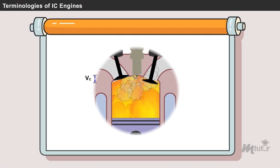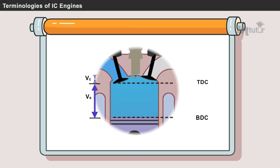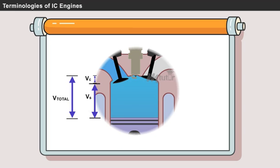The volume swept through by the piston between top dead center and bottom dead center is called swept volume. It is also called as piston displacement. Total volume is equal to the sum of swept volume and clearance volume.